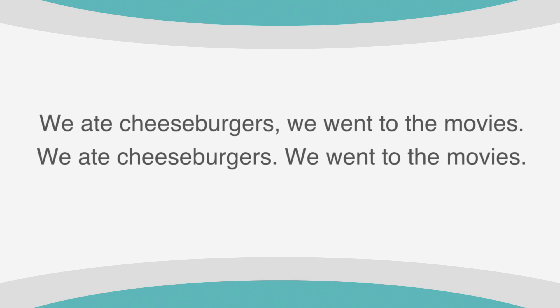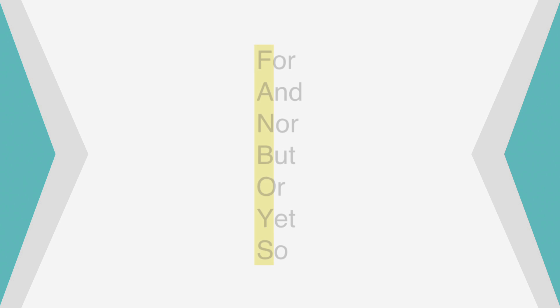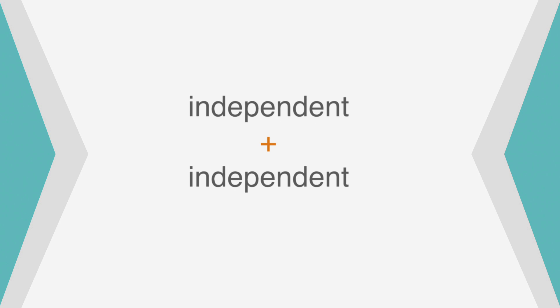What are FANBOYS, you ask? It's actually an acronym for the coordinating conjunctions we need to use when joining two independent clauses. FANBOYS stands for: for, and, nor, but, or, yet, and so. When using FANBOYS to connect two independent clauses, a comma is always needed. When using FANBOYS to connect an independent and dependent clause, a comma is not needed.